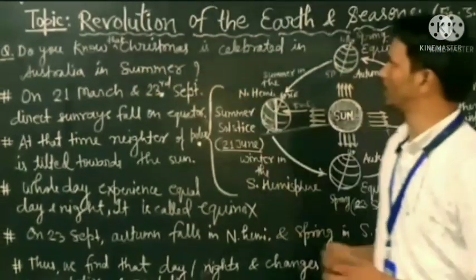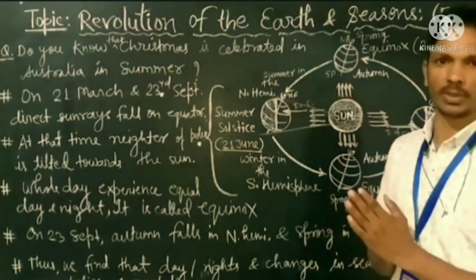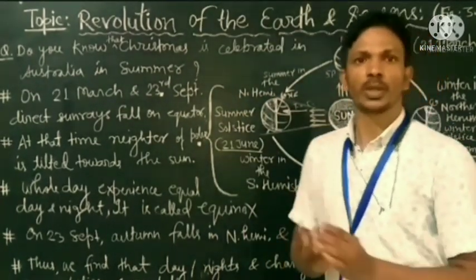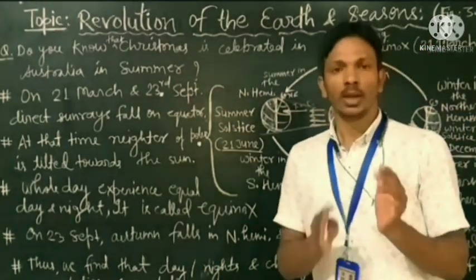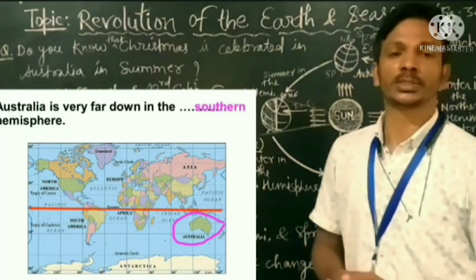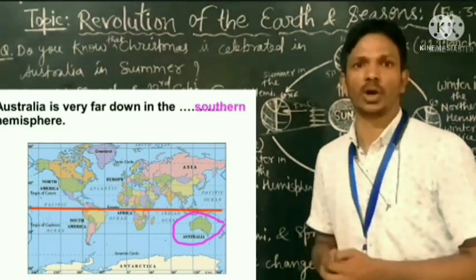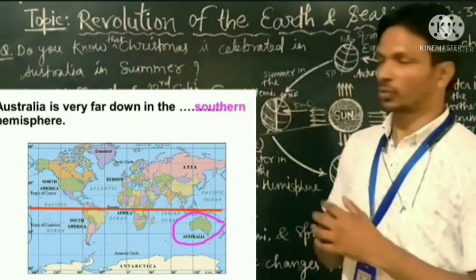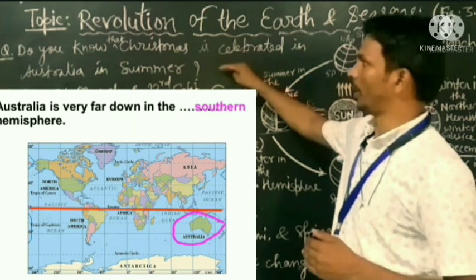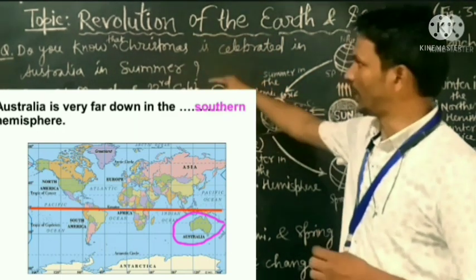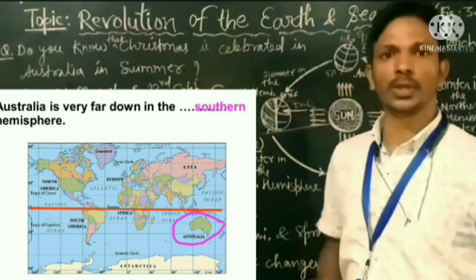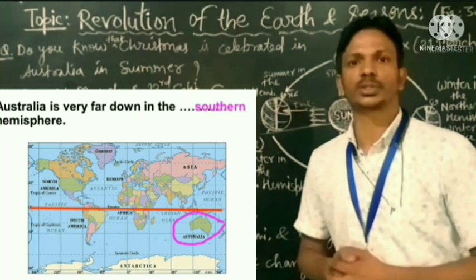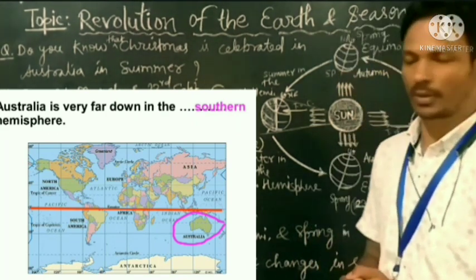Do you know that Christmas is celebrated in Australian summer? When it is winter in the northern hemisphere, Australia faces the summer season, because Australia is located in the southern hemisphere. That is why Australia celebrates Christmas in summer.